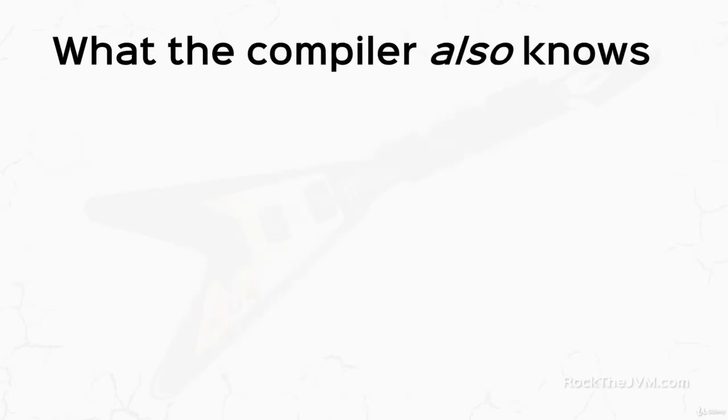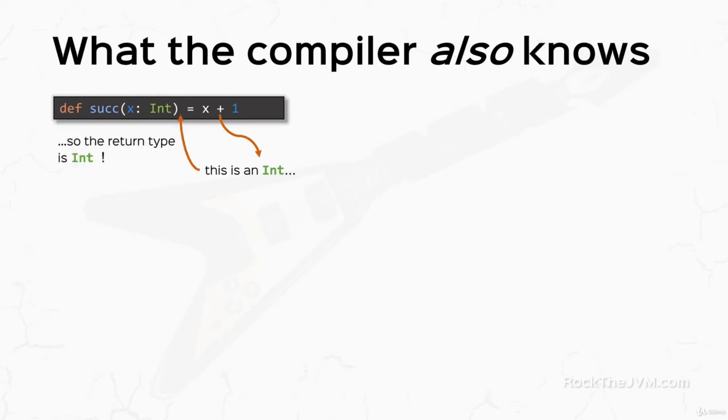All right, now the compiler is also able to figure out the return types of functions by looking at their implementations. So if I, for example, define this little successor function, which returns the next integer, the compiler is able to look at the implementation, figure out that the resulting expression returns, in this case, an int, so it's able to figure out that the return type of this function is int.